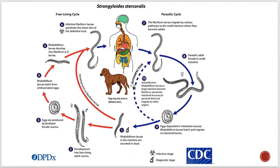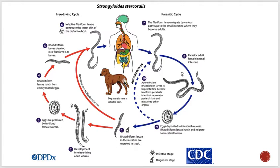A condition called hyper-infection occurs when a large number of rhabditiform larvae transform into filariform larvae, penetrate the mucosa of the colon, and cause severe disease. This mostly occurs in malnourished or immunocompromised people. Anyone infected with Strongyloides stercoralis who is given immunosuppressants or develops AIDS may develop hyper-infection syndrome.